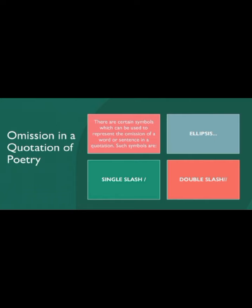Omission in a quotation of poetry is allowed when we use certain symbols to represent the omission of a word or sentence in a quotation. Such symbols are ellipses, single slash, and double slashes.